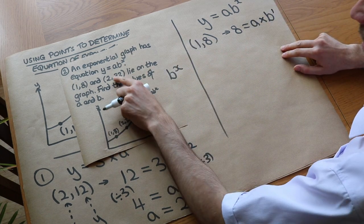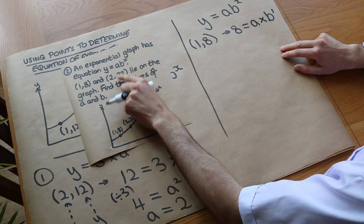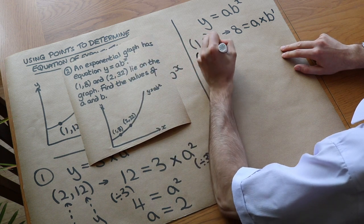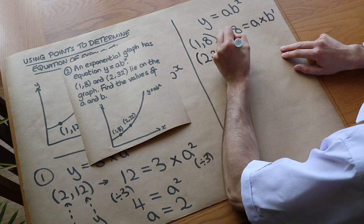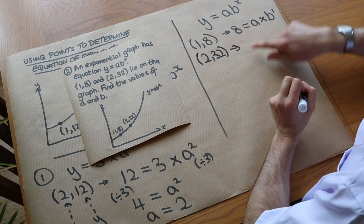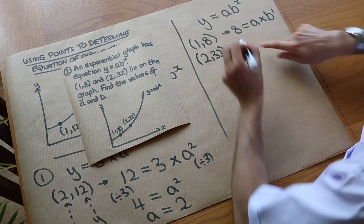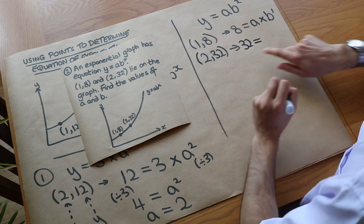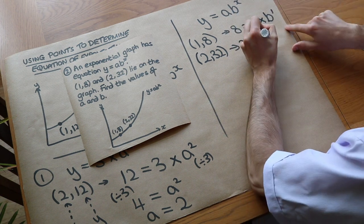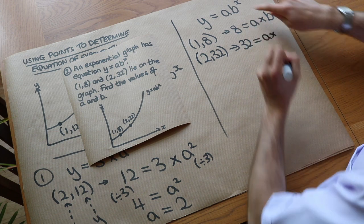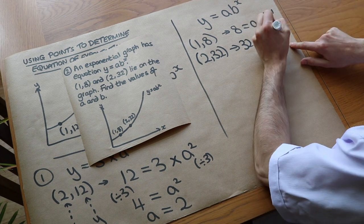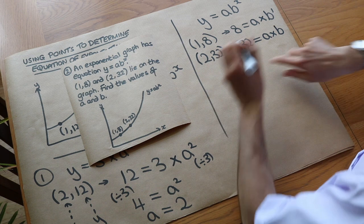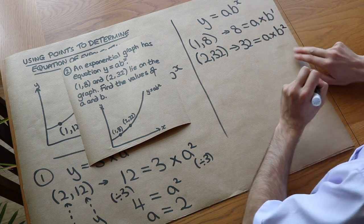Now using the second point (2, 32), substituting into the equation gives y which is 32 equals a times b to the power of x, which is 2. So our second equation is 32 equals a times b squared.